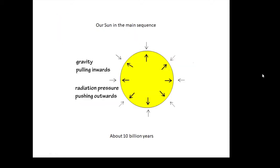This is our Sun at the moment. There's forces pulling inwards which is gravity - gravity always pulls inwards. And then there are forces due to the nuclear fusion pushing outwards and we call this radiation pressure pushing outwards.